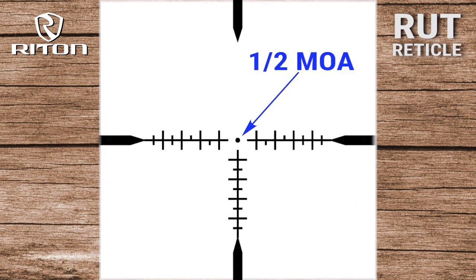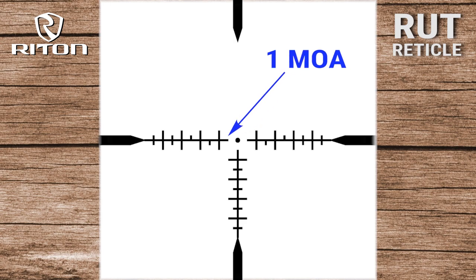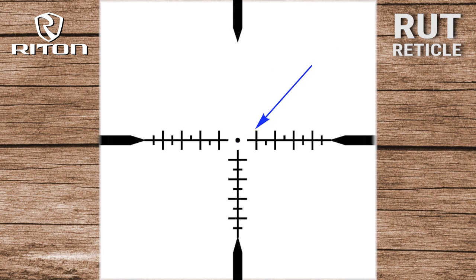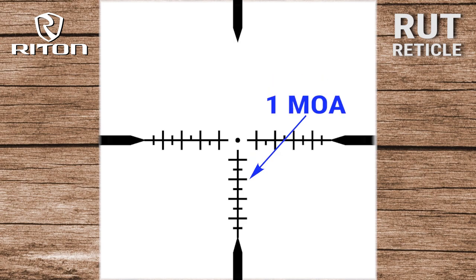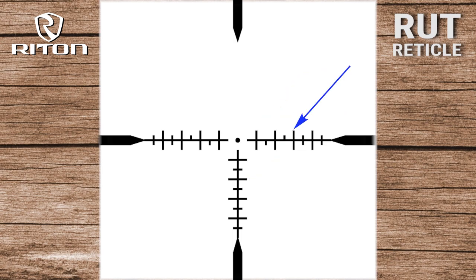It has a half minute of angle center dot, which is a nice precise dot, with one minute of angle gaps either side and underneath — again, the idea being field of view. Along with that, there are one minute of angle hash marks for windage and elevation for precision, but we've taken every second minute of angle and given it a larger line so that it's easy to count by twos or by ones.